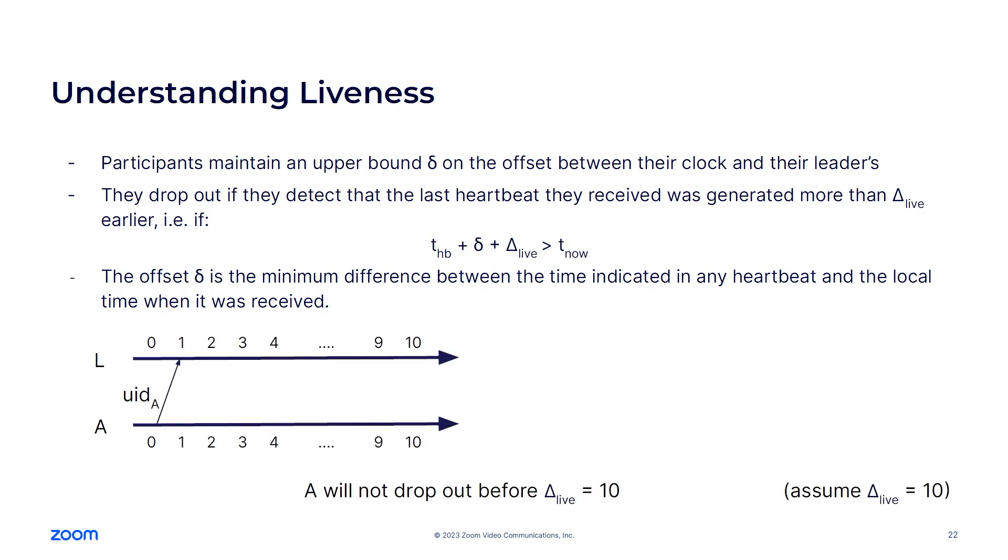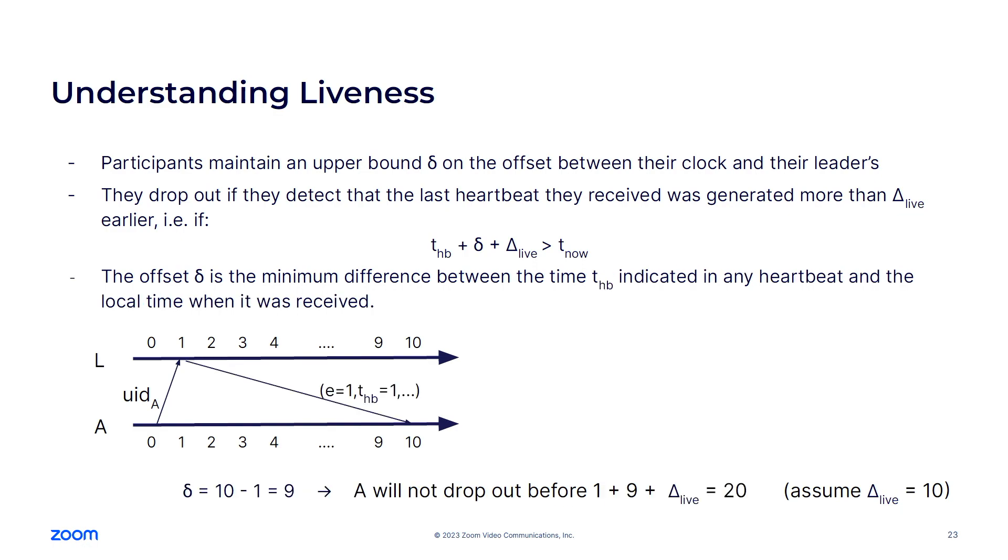Delta is the offset that allows the participant to translate this timestamp according to their own local clock. And delta live is this tolerance and T now is the current time. So if the equation is satisfied, the participant will drop out. How do we set this offset, this estimate? It is set as the minimum difference between the time that is indicated in any heartbeat that the participant receives and the local time at which it was received. So let's see an example. In this case, Alice. So the two lines represent the time according to the local clock of the participants. So in this case, Alice and the leader have perfectly synchronized clocks. So Alice will generate her ephemeral identity at time zero and the leader receives it at time one.